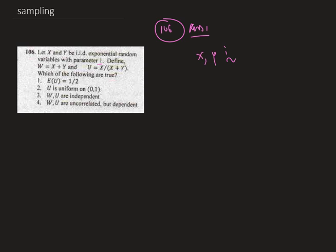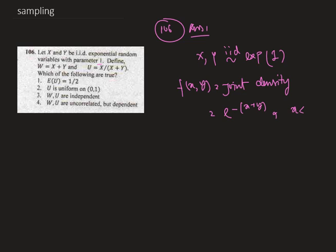x and y are iid exponential with parameter 1. Therefore, we can say that the joint density of x and y is nothing but e to the power minus x plus y, where x and y are from 0 to infinity.